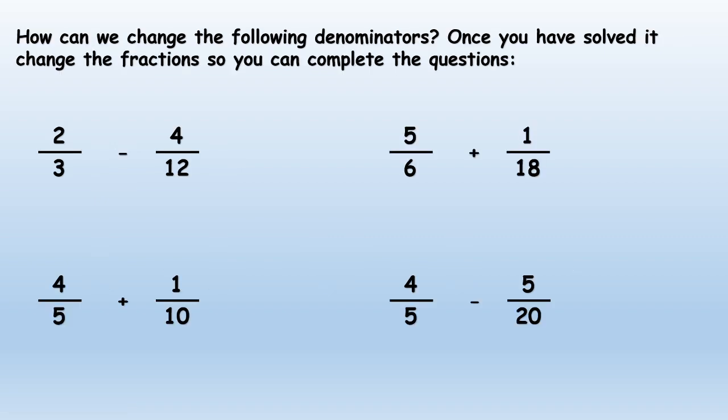Here you will do exactly the same process. If you said yes to all of these, you would be right. Three times four will give us twelve, and we're going to do the same with our numerator. Two times four will give us eight. So technically we would have eight over twelve minus four over twelve, which would leave us with four over twelve.